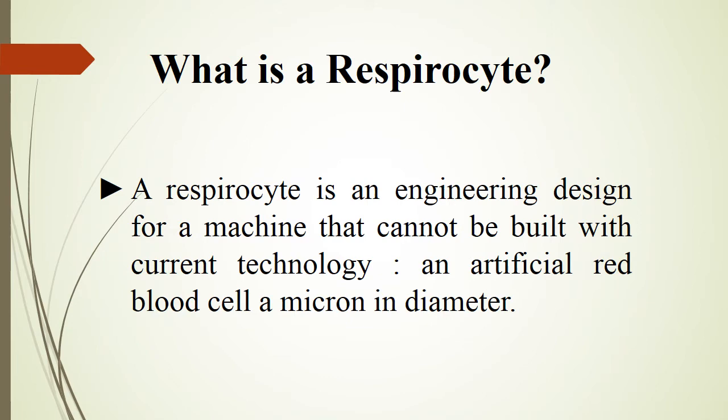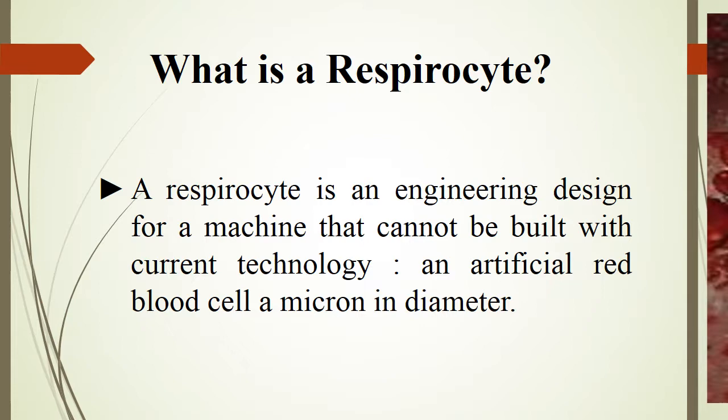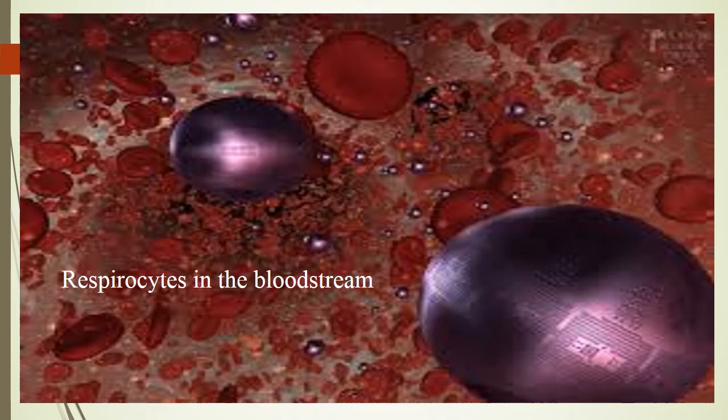Thanks. Greetings. I'm going to present the next part. What is a respirocyte? A respirocyte is a kind of artificial robot that floats in the bloodstream. It functions similarly to red blood cells — it carries oxygen, unloads oxygen at specified locations, and carries CO2 while returning. But respirocytes have the ability to deliver oxygen 236 times more per unit volume than natural red blood cells. We can see in this figure the respirocytes in the bloodstream alongside red blood cells.